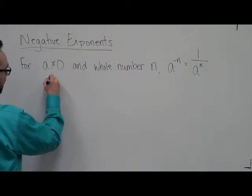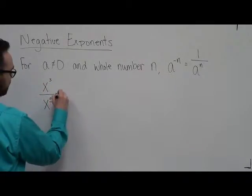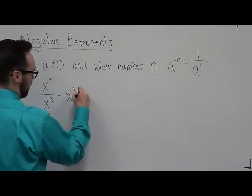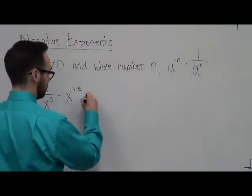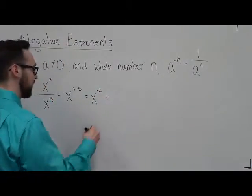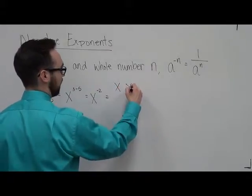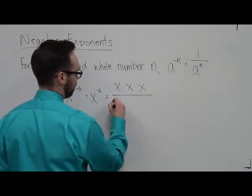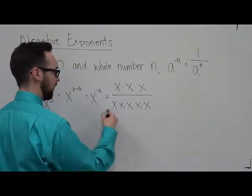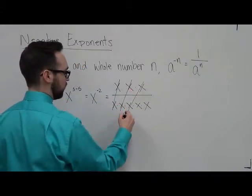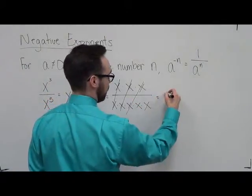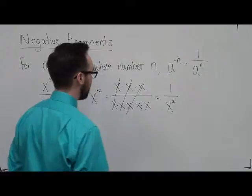Well, if I have x to the third over x to the fifth, this really means x to the three minus five, which is x to the negative two. Well, what is that? If I write that out as x times x times x over five x's, we can cancel out three of these, and we're still left with two on the bottom this time.